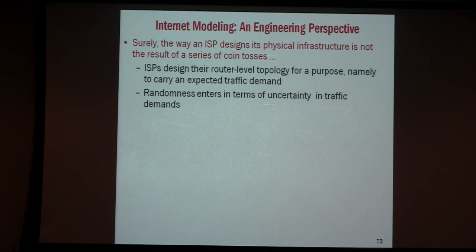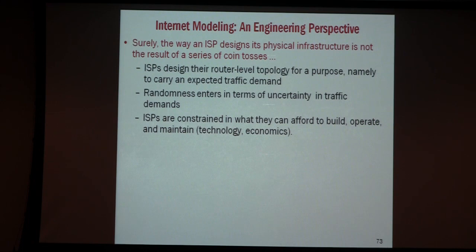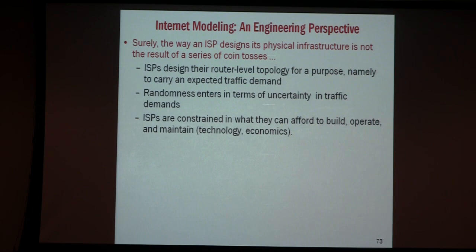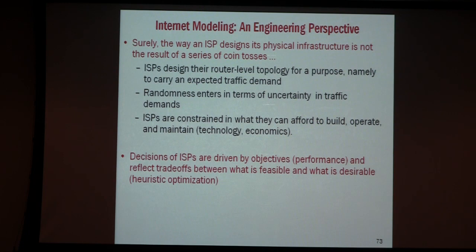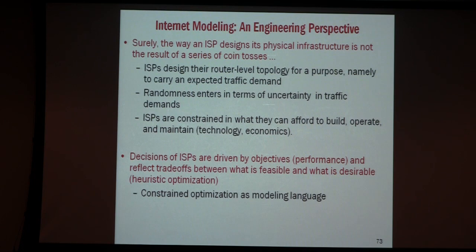An ISP wants to build a network in such a way that, first, it can buy equipment from the existing market — meaning it has to use existing technology. Then it wants to build it efficiently economically, not gold-plated. And you also want to be somewhat robust. I don't know the traffic demand — it is fluctuating — and I want to design a network that is robust to certain types of traffic fluctuations. That is the goal. This boils down to a constrained optimization problem: you have an objective, you have constraints, and you want to be robust to uncertainty. Instead of graph theory, you have constraint optimization. And in this whole process, power law? Who cares.